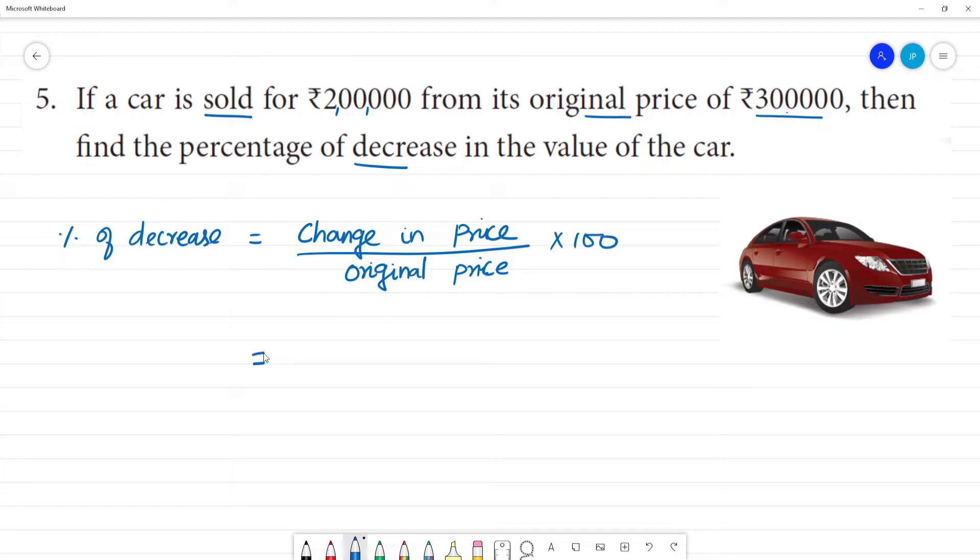This is equal to change in price, which is 3 lakhs rupees minus 2 lakhs rupees, divided by the original price which is 3 lakhs, into 100.